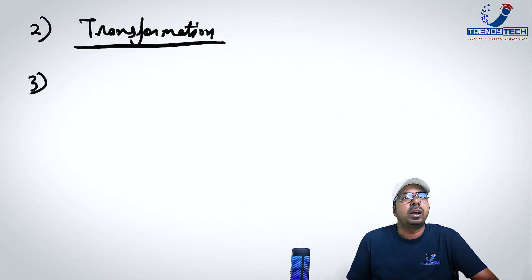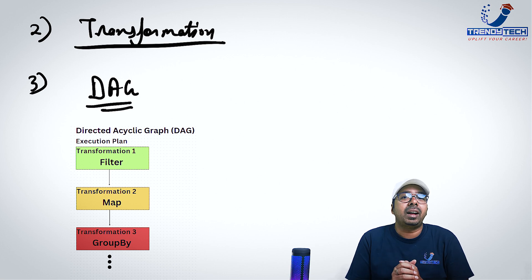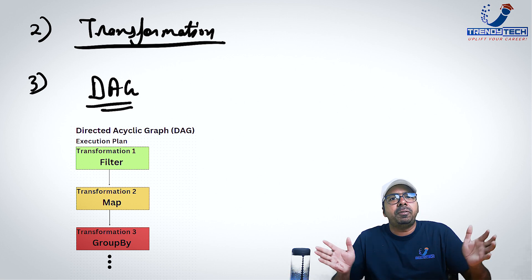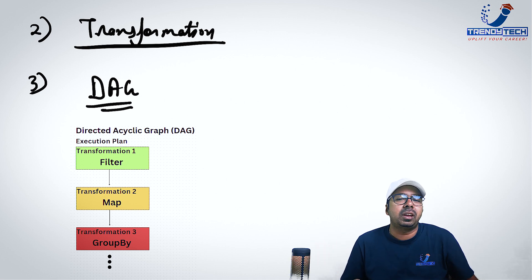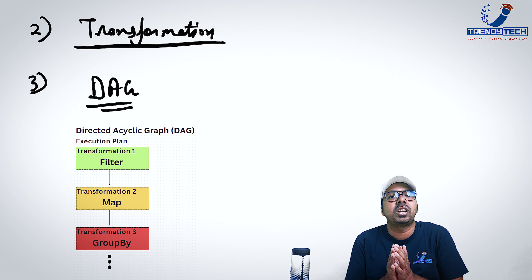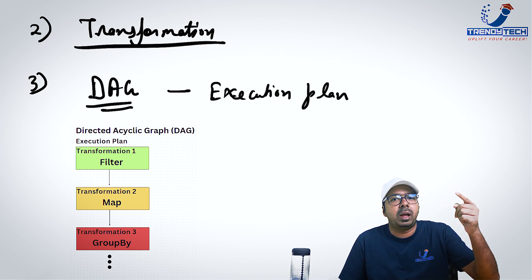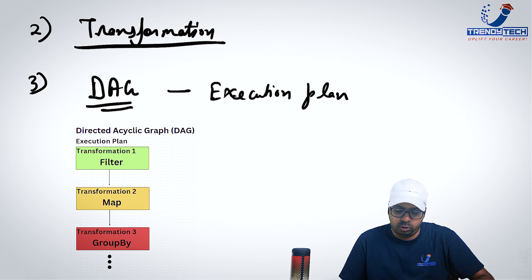Now the third thing that I would like to talk about, what is a DAG? DAG stands for Directed Acyclic Graph. So that means when you put a bunch of transformations, a diagram kind of thing is created that, okay, first do a filter, then do a map, then do a group by and so on. That is what is a DAG. It's like an execution plan. Think it like an execution plan. That means first this transformation should happen, next this, next this and so on.